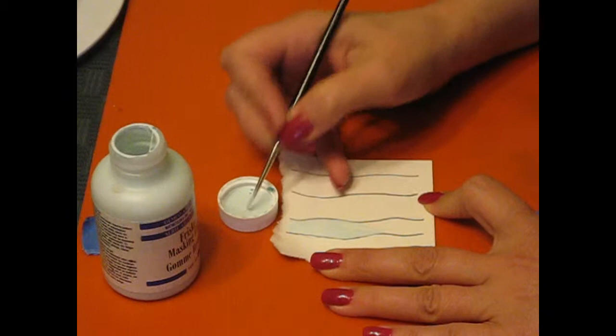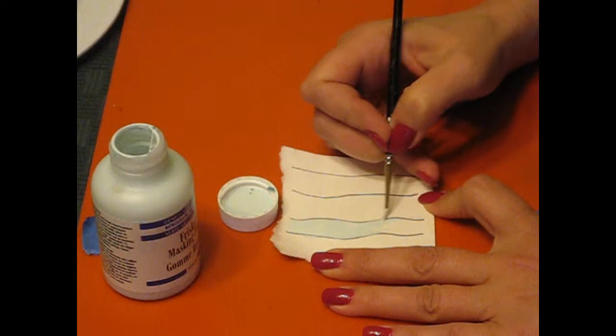Just brush it on and you'll see that it's self leveling. And go over your outlines of your trees.